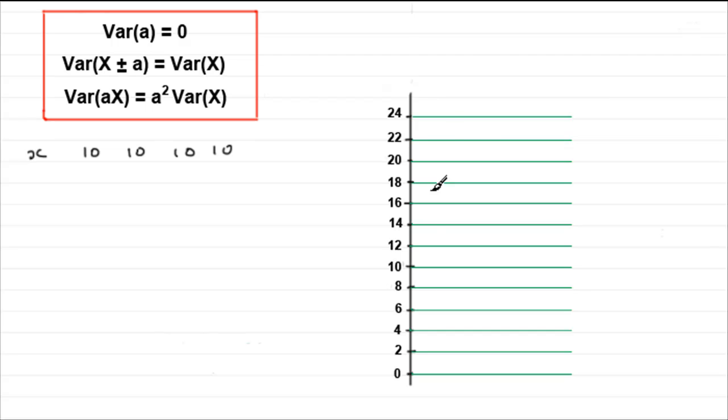And if I plotted those observed values on this scale here, what are they going to look like? Well, obviously we could just put one of them there, a 10 there, a 10 here, a 10 here and a 10 here. They're all exactly the same. So what would I expect the mean to be?